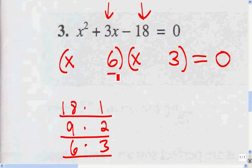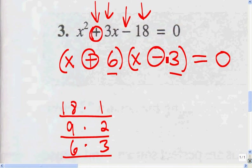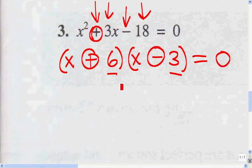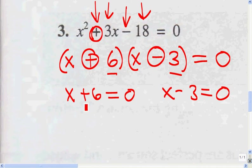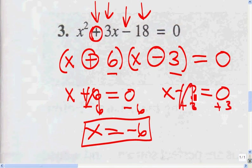Now that I know the factors are 6 and 3, I ask which needs to be positive and which needs to be negative. I know the signs have to be different because the third term is negative. Since the middle term is positive, the bigger number has to be positive — so 6 is positive and 3 is negative. I separate them: X plus 6 equals 0, giving X equals negative 6; and X minus 3 equals 0, giving X equals 3.